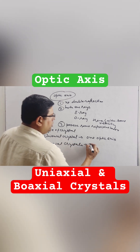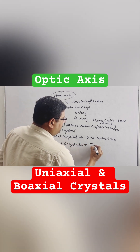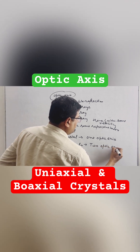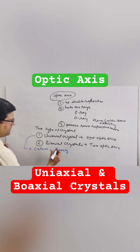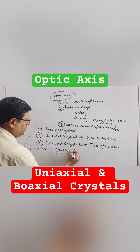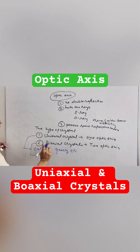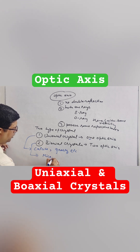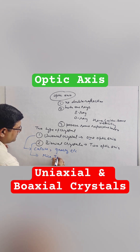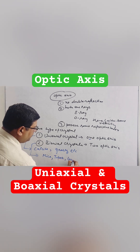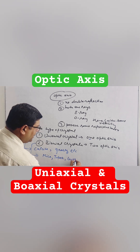Biaxial crystals are those having two optic axes. Examples of uniaxial crystals are calcite, quartz, etc. And examples of biaxial crystals are mica, topaz, gypsum, etc.